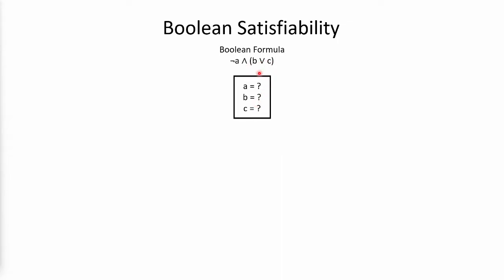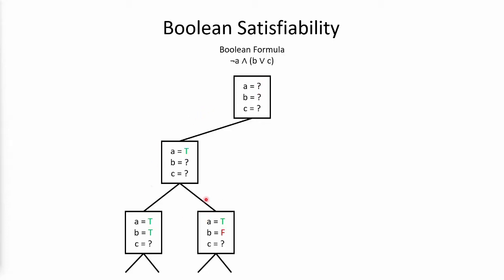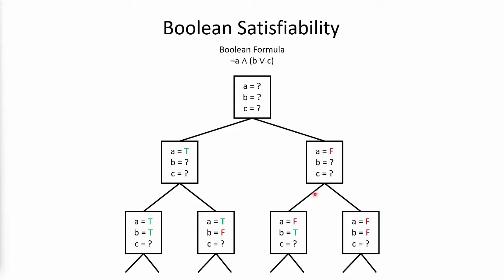We can find that, for example, with a very simple brute force search. We would guess a value for each variable. At some point we might hit a dead end, so we backtrack and search a different part of the tree until we find an assignment that actually makes the formula true.